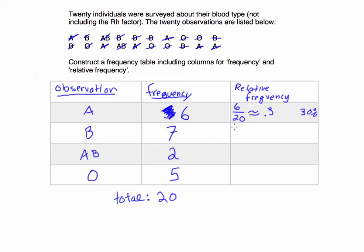and you would know it's a percent if the column had a percentage sign. So point three would be thirty percent. Let's continue. Blood type B appeared seven times out of a total of twenty, which is approximately thirty-five percent.